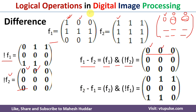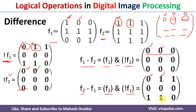Similarly, F2 minus F1 can be done directly — for example, one minus zero, one minus one — or using the second method: F2 AND (NOT F1). Since NOT of F1 is already known, we perform AND between F2 and NOT F1: one AND zero equals zero, one AND one equals one, and so on. There are multiple methods to calculate the difference; whichever is easier can be used.